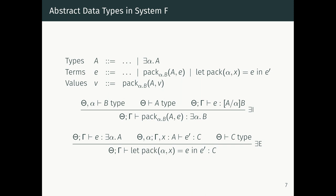The pack expression 'pack A, e' requires knowing that B is a type with α as a free variable (the module signature), that A is a well-formed type, and that the implementation e has type B with A substituted for α. We're choosing A as the representation type for the abstract type, and checking that the rest of the module is well-typed with that concrete representation. This is a first-class module construct we're adding to System F.